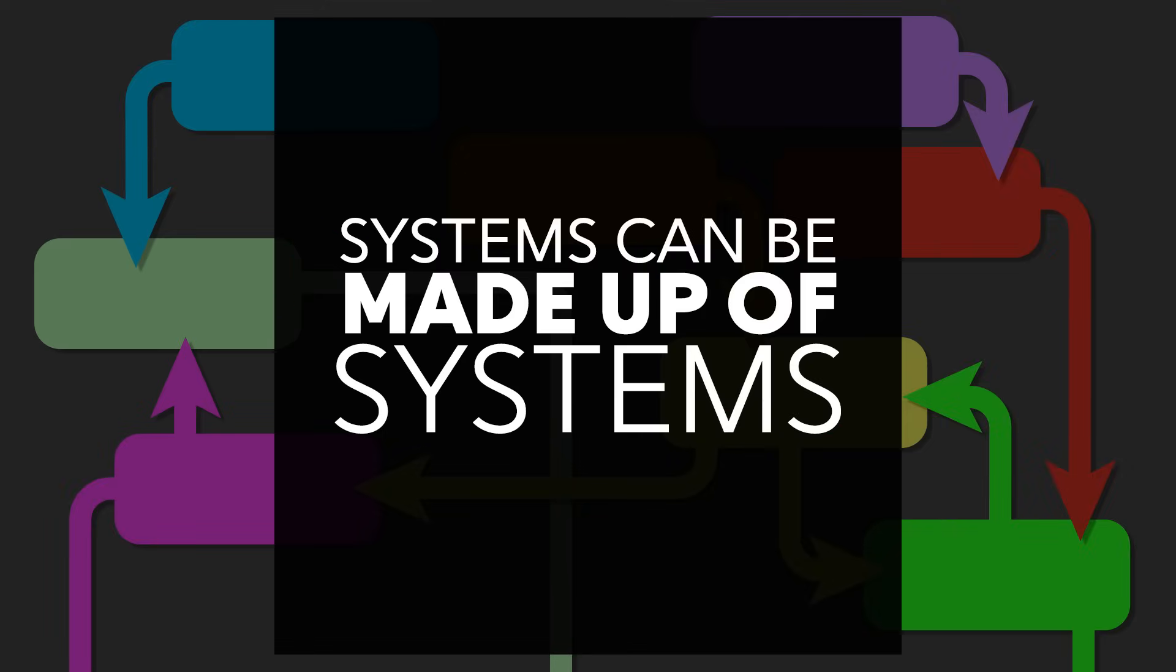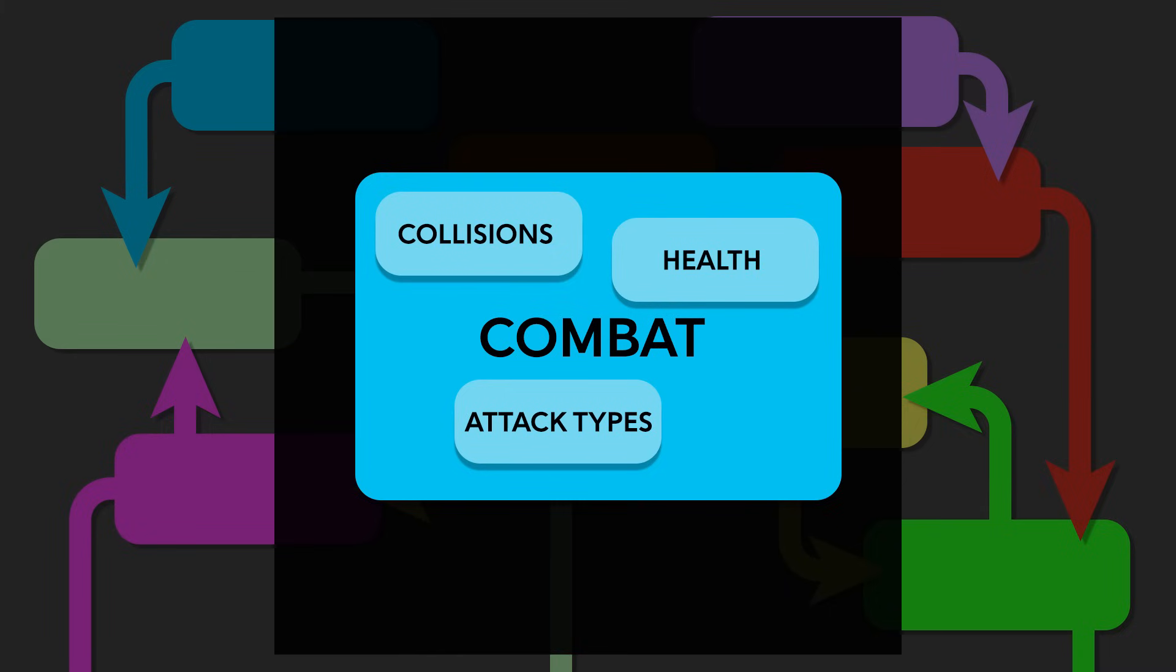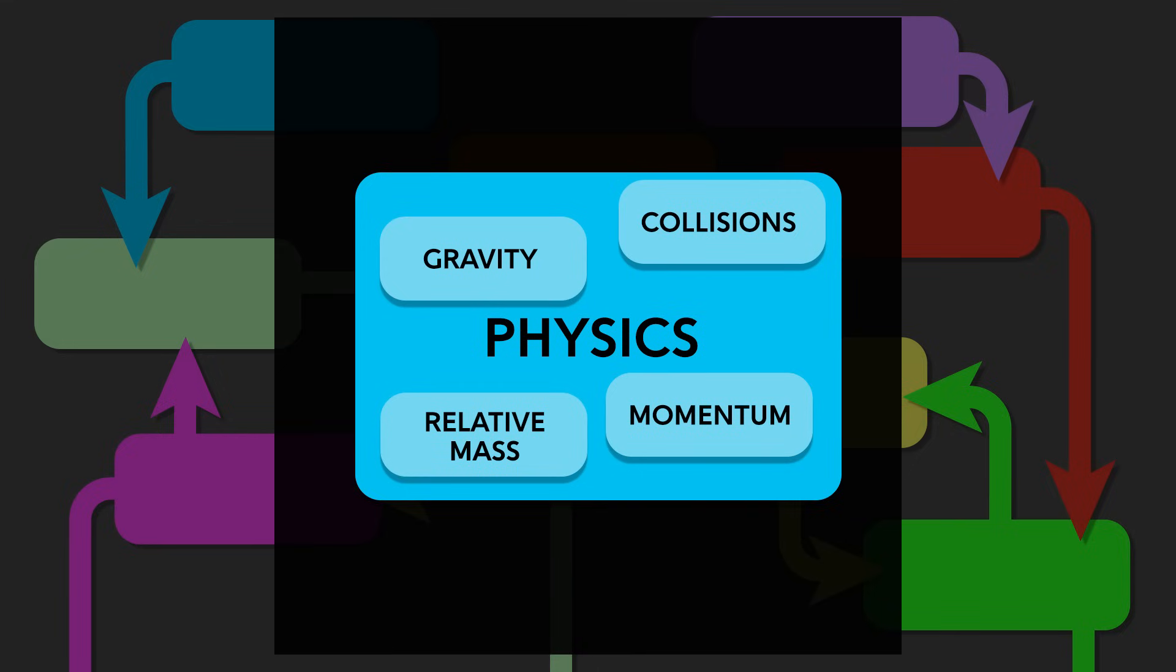Systems can be made up of other systems. Mike Sellers, who literally wrote the book on game systems, discusses this topic in a number of his own talks. A combat system may use health and collision, and maybe some sort of weakness-immunity system, or a physics system might use gravity and collision systems, among others.